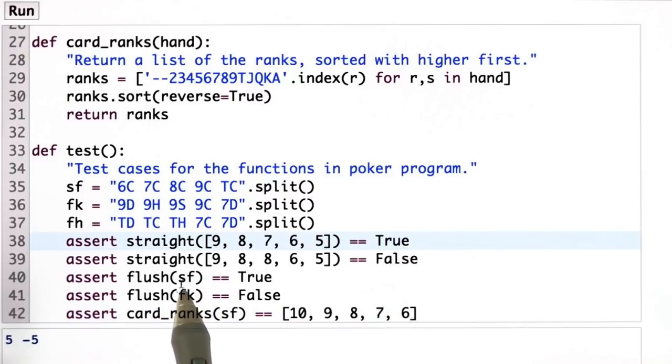As for flushes, the straight flush, which had all clubs, that should be true. That should be a flush. And the four of a kind, which had all four different suits, should not be a flush.